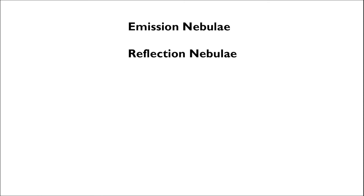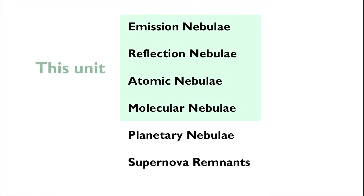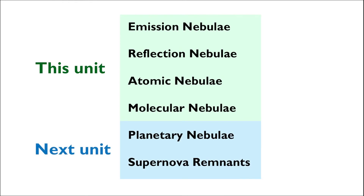In this video, we'll begin exploring the different types of interstellar medium. We have emission, reflection, atomic, molecular, and planetary nebulae, as well as supernova remnants. We'll first take a look at the first four items in this list, and then we'll cover planetary nebulae and supernova remnants in the next unit where we discuss the various paths of stellar evolution.